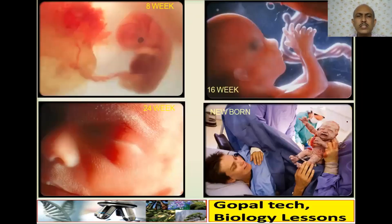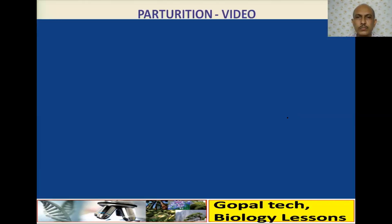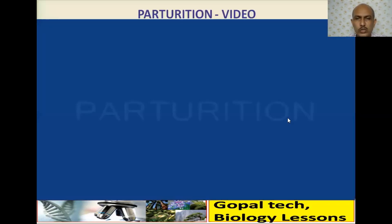These pictures show: at 8 weeks, 16 weeks, and 24 weeks — you can see all organs beginning to develop — and finally a newborn baby. Watch this video to understand the parturition process and how it takes place in human beings.